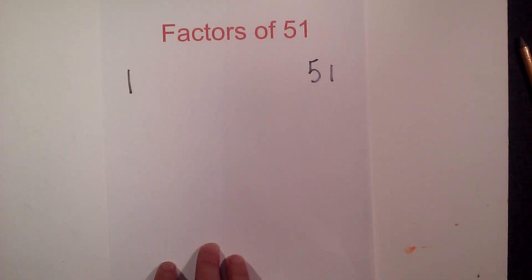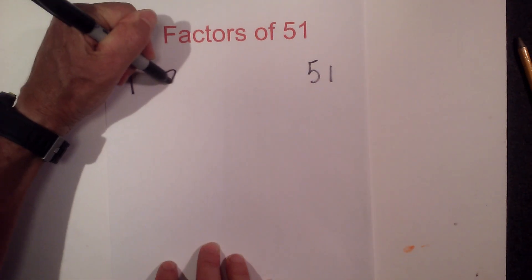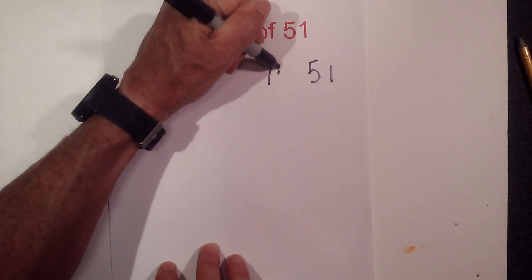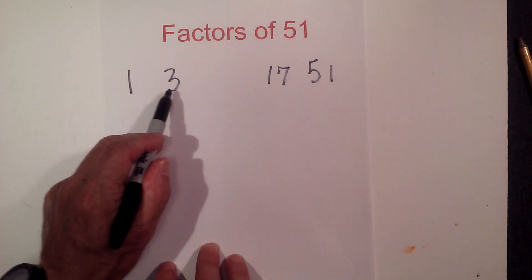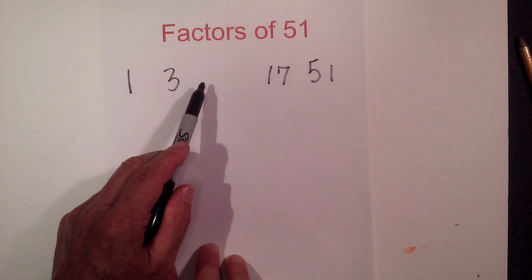2 will not go into 51. 3 goes into 51 17 times, so 3 times 17 is 51. 4 will not go, 5 will not go, 6 will not go into 51, 7, 8, 9, 10.